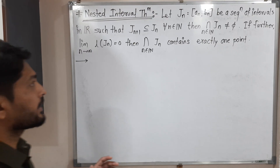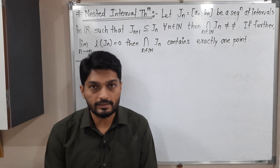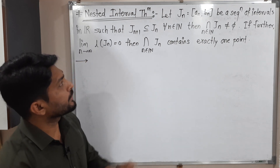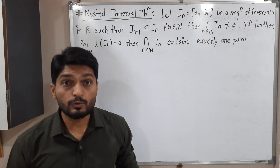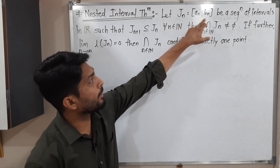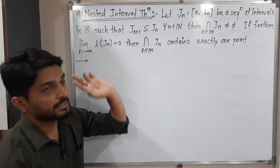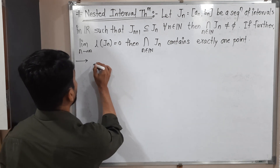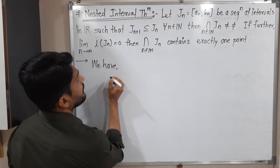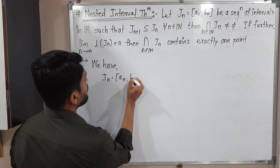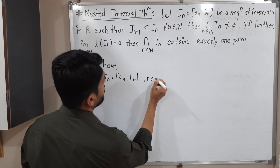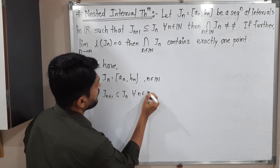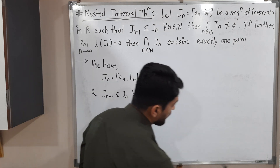Let us discuss the Nested Interval Theorem — it is a special case of Cantor's Intersection Theorem, so if you have already gone through that, you will find this very easy. Given: J_n is a sequence of closed intervals defined as J_n = [a_n, b_n] for n belonging to the set of natural numbers, and J_{n+1} ⊆ J_n, meaning it is a decreasing sequence of intervals.